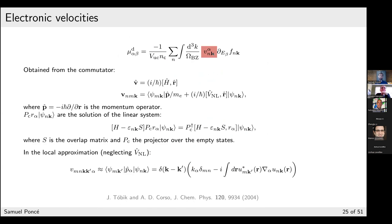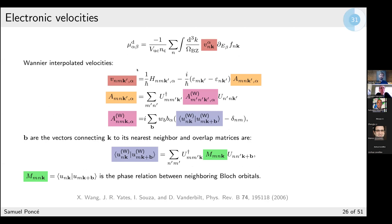A small note for the hands-on: to compute the drift mobility, we need both the change of occupation function due to the external electric field (from solving the BTE) and the carrier velocity. In EPW, there are two ways to compute the velocity: from the commutator of the Hamiltonian with the position operator, or using Wannier-interpolated velocities. These are two alternative implementations and in the limit of a good Wannier function they give the same result.